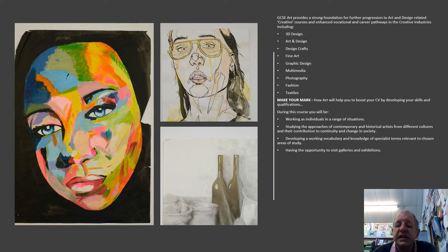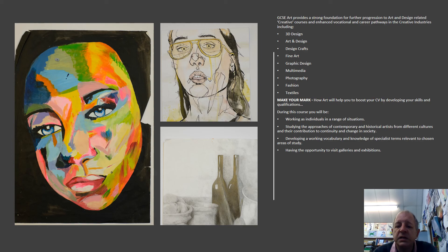After GCSE, you can stay at Saltash to study A-level Art. We offer a fine art course which is mainly drawing, painting and printmaking, but you can also go to art school to study other disciplines within the creative sector. Once you've left art school, you can work in the creative sector in many fields of visual arts, including fashion and textiles, photography, multimedia, spatial design, architecture or gaming design.